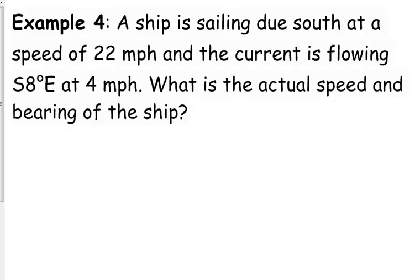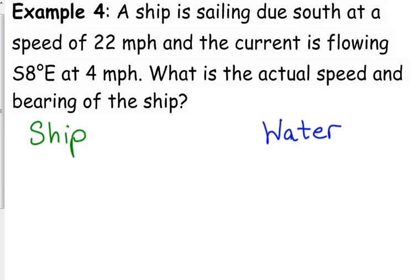Sailing due south at a speed of 22 miles per hour, and the current is flowing at south 8 degrees east at 4 miles per hour. What is the actual speed and bearing of the ship? This is going to be the exact same thing as the plane, but this time we just have ship and water. My water needs to be blue, I have a little OCD thing about that. The ship is sailing due south, that means it is going directly south at 22 miles per hour.